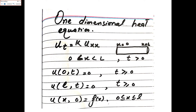We will revisit the same question from the previous lecture, which was solved by the Fourier transform — now we solve it by the method of separation of variables. The heat equation in one dimension is u_t = k·u_xx. There is a rod of length l, with x ranging from 0 to l, and heat is continuously supplied. Boundary conditions: u(0,t) = 0 and u(l,t) = 0. Initial condition: u(x,0) = f(x) for 0 < x < l.